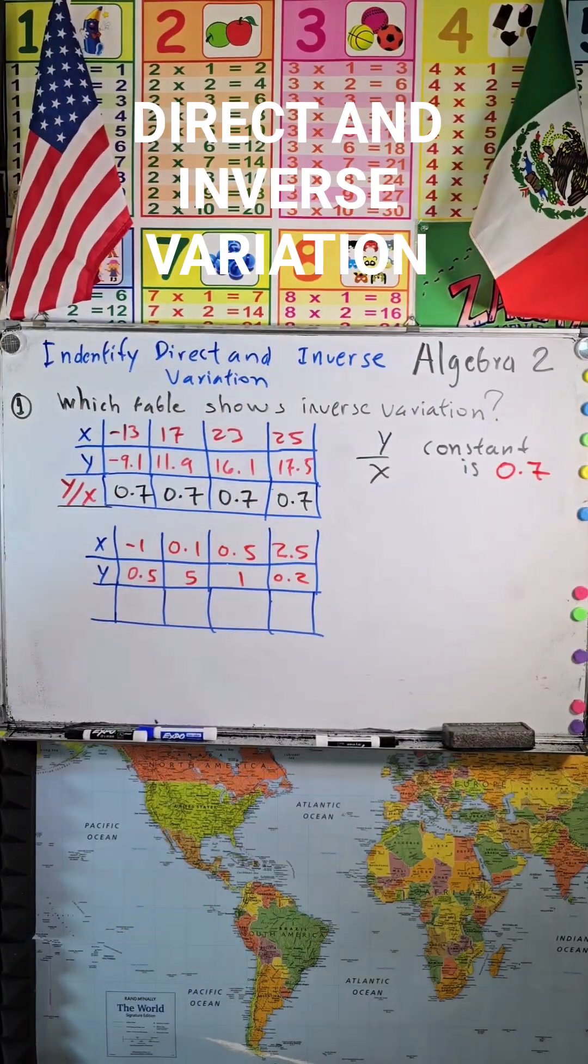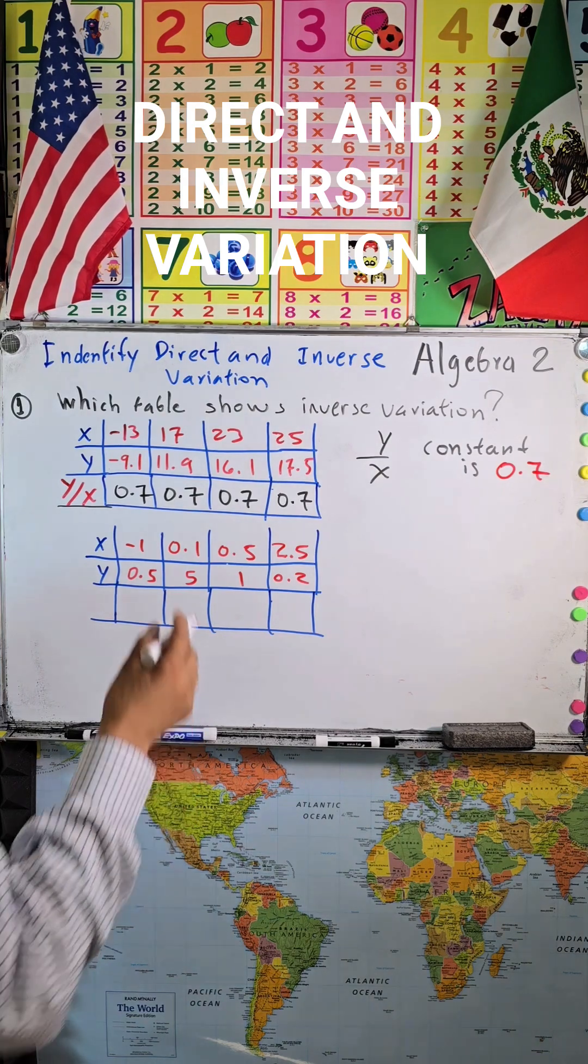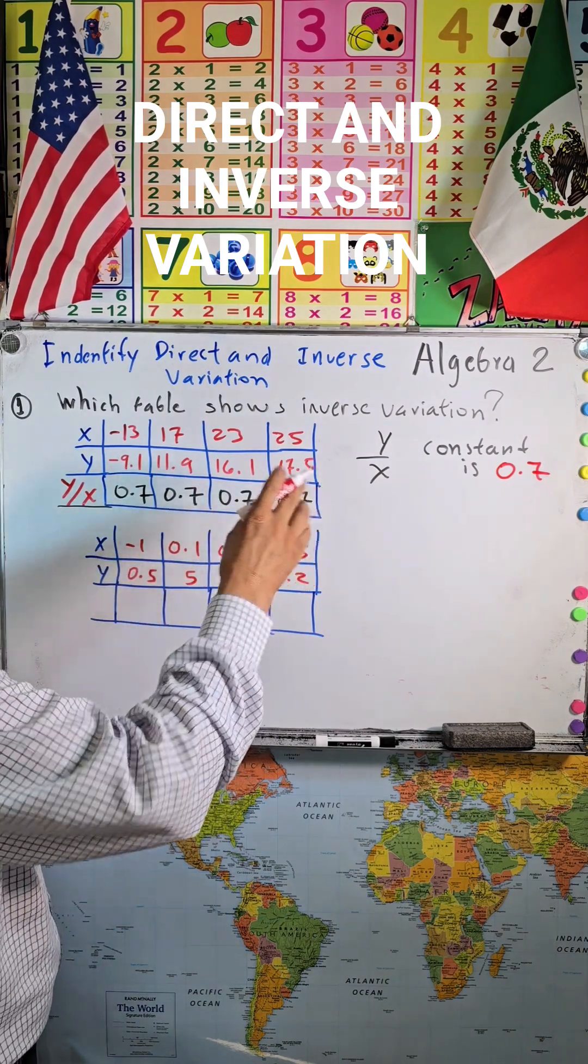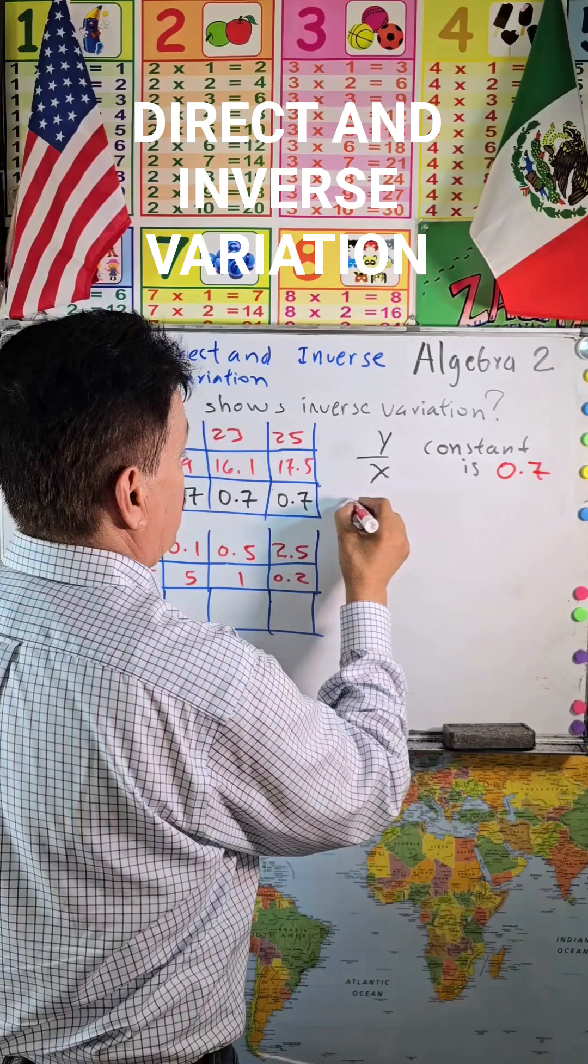So in this case, this table shows direct variation. This is direct variation.